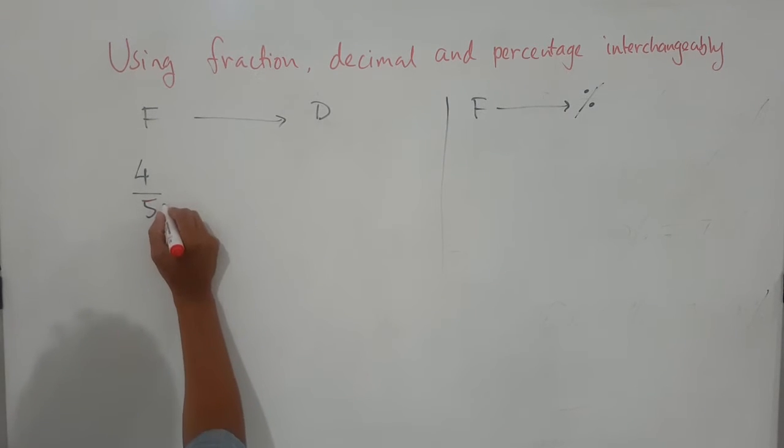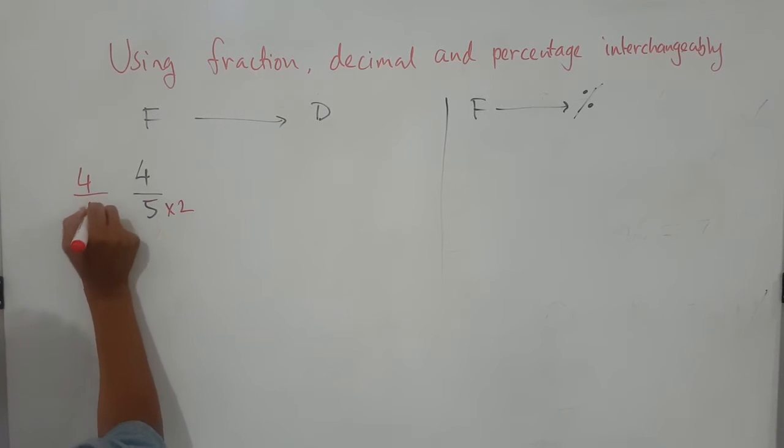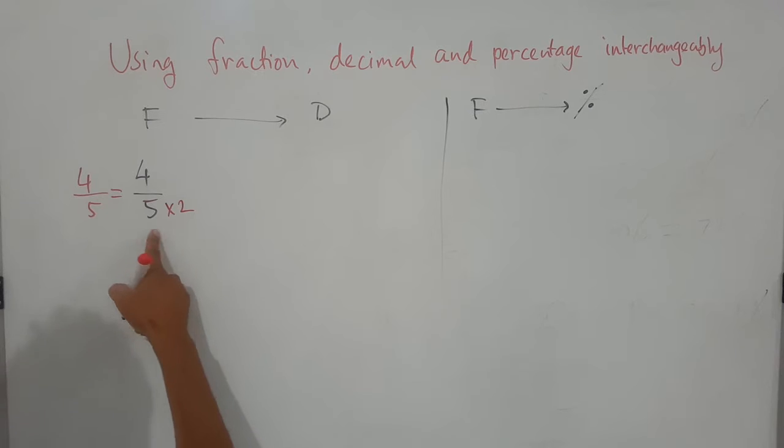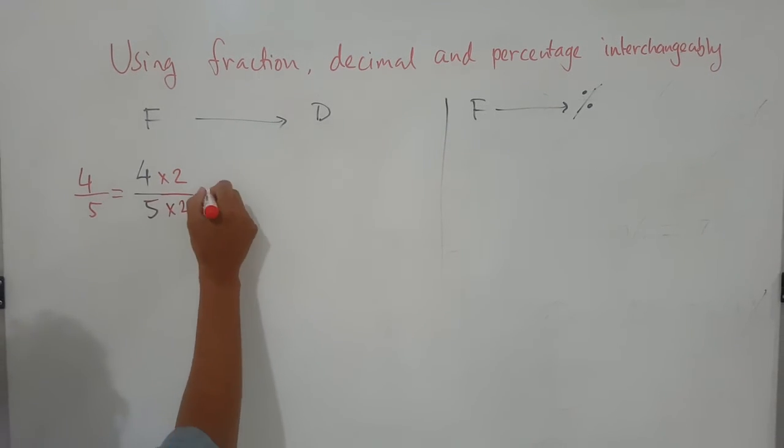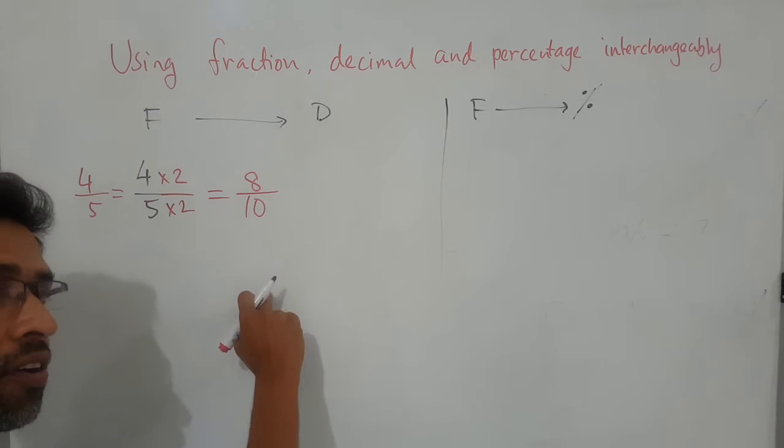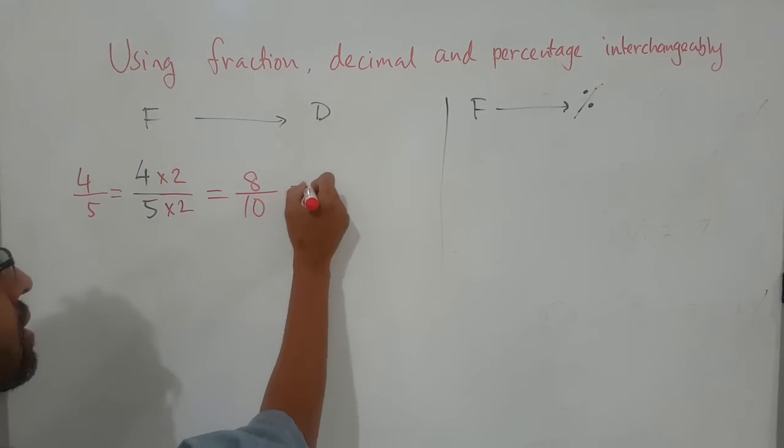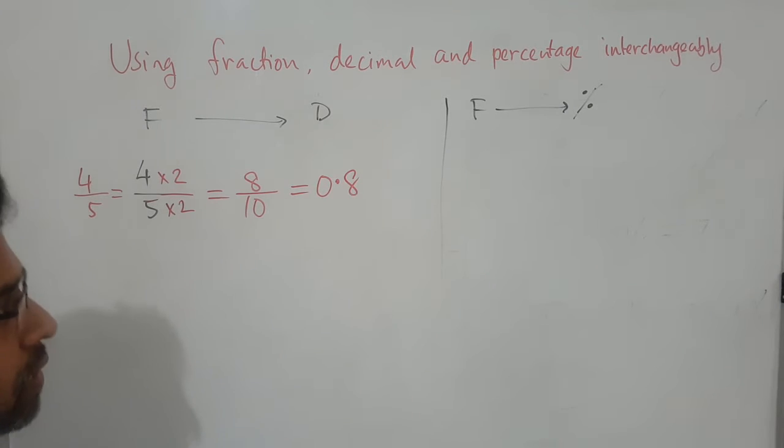Because if you just multiply by 2, so this is basically starting with 4 over 5, that is the original number. We can write this as multiplying by 2 in both numerator and denominator to make it 10 here, and then this is 8. So creating 10, 100, 1000 we can easily convert to decimal, which is 0.8.